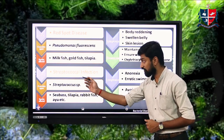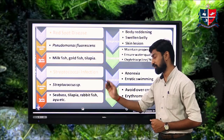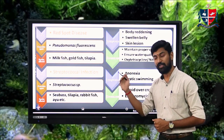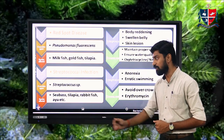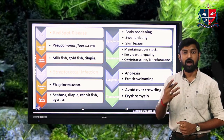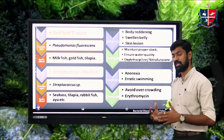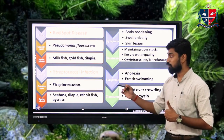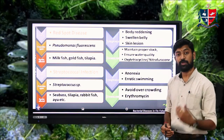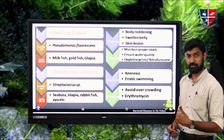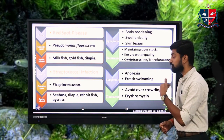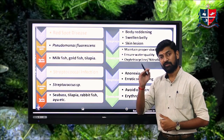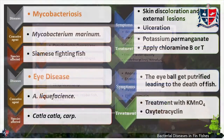Streptococcal infection is caused by Streptococcus bacteria, mainly affecting sea bass, tilapia, rabbit fish, and ayu. Major symptoms include anorexia and erratic or irregular movement of the fish. Prevention involves avoiding overcrowding and maintaining good water quality. Erythromycin is used for treating streptococcal infection.